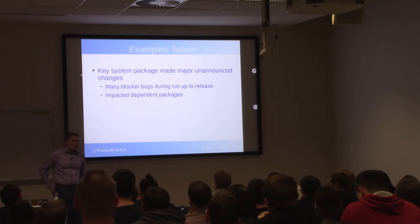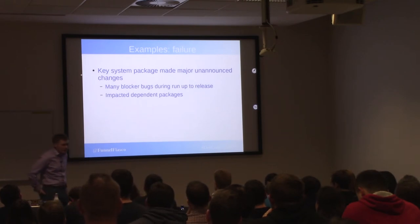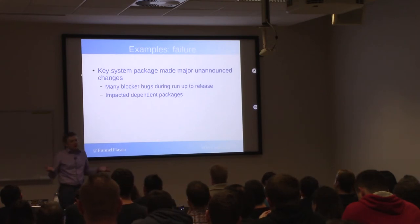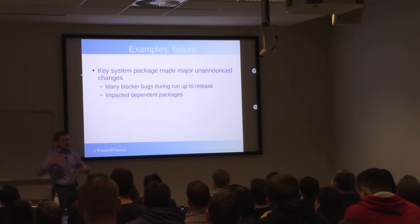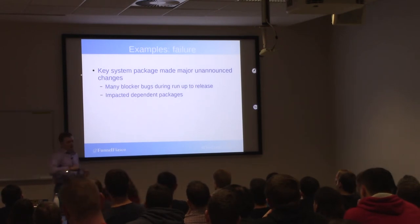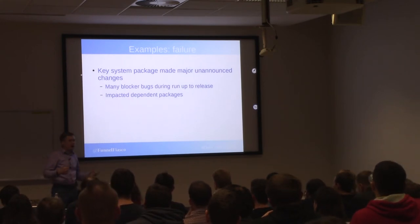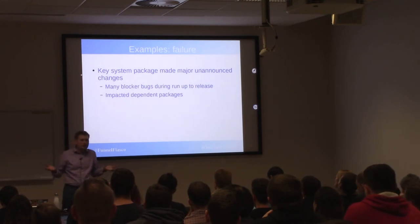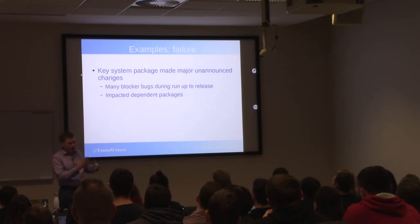Sometimes people don't follow the process. A key system package made some major unannounced changes, which brought up a lot of blocker bugs that we didn't notice right away. As we got closer to the release, we found things weren't working, and they submitted some fixes but also had some new features that created more problems. There were packages dependent on that package, so it ended up as a hero effort from QA and the dependent package developers to try and get everything working so we could ship something approaching on time. We sent them an email saying it's really good to at least let us know changes are coming so people can be prepared when you change your API.